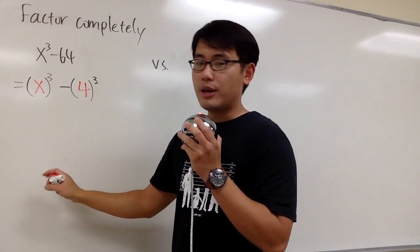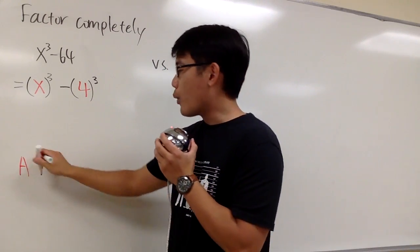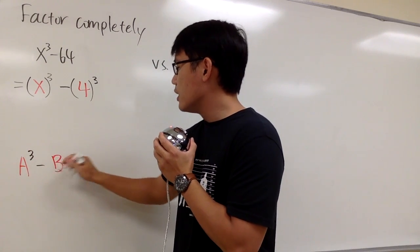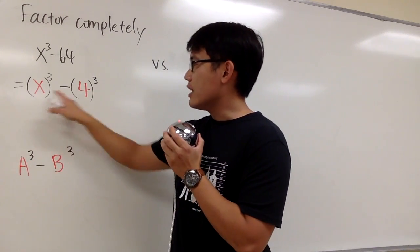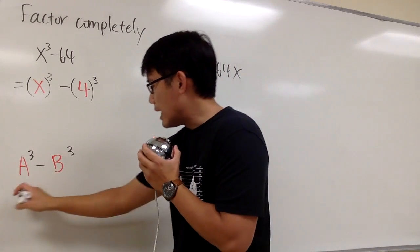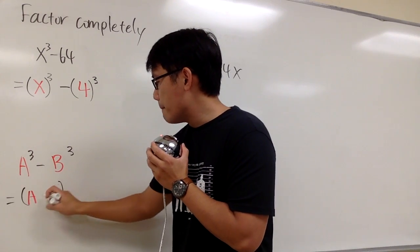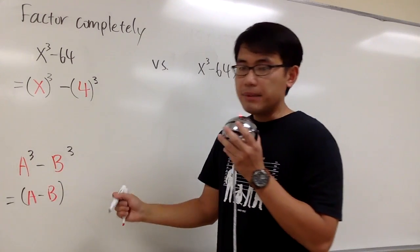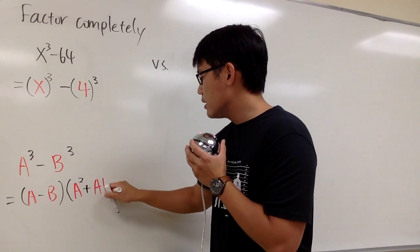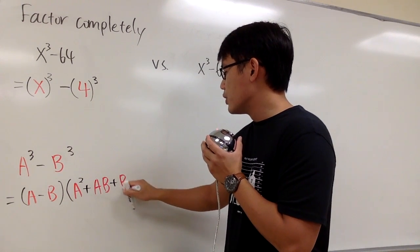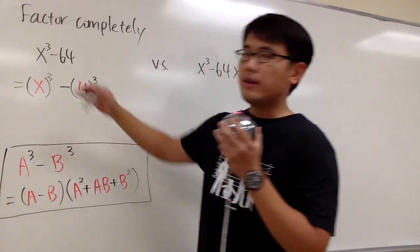Let me write down the formula right here. The formula says: if we want to factor a to the third power minus b to the third power — where a and b are what's inside the parentheses — the result is going to be, for the first parentheses, a minus b, and for the second parentheses, a squared plus ab plus b squared. This is the formula we have to remember to factor this out.